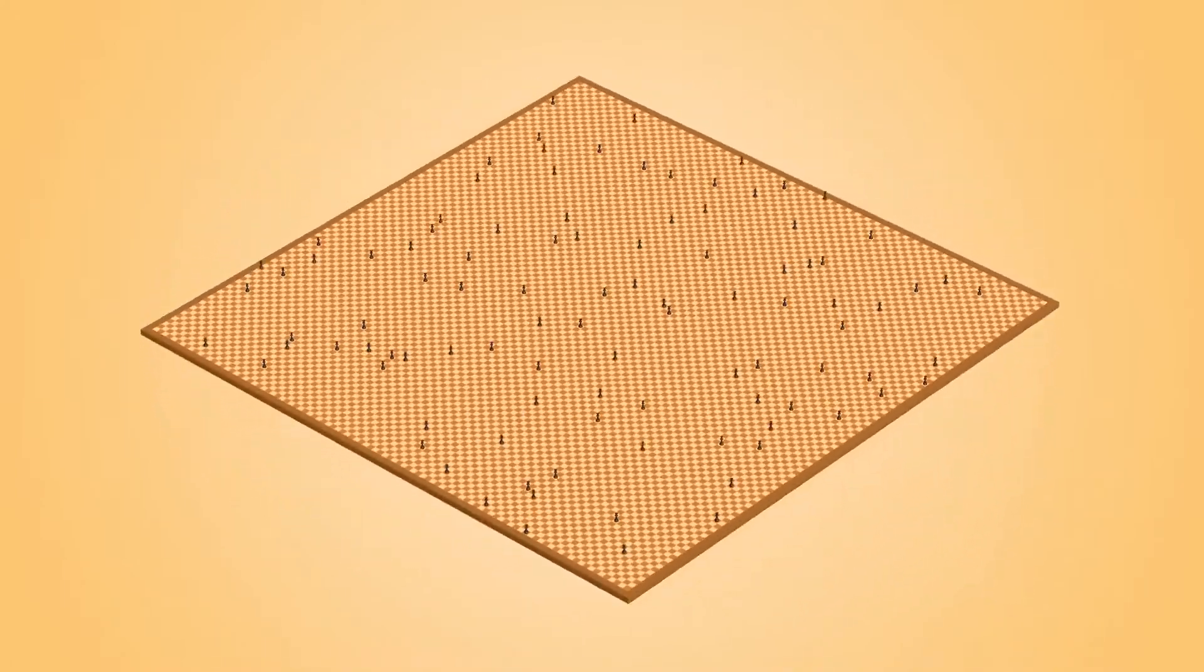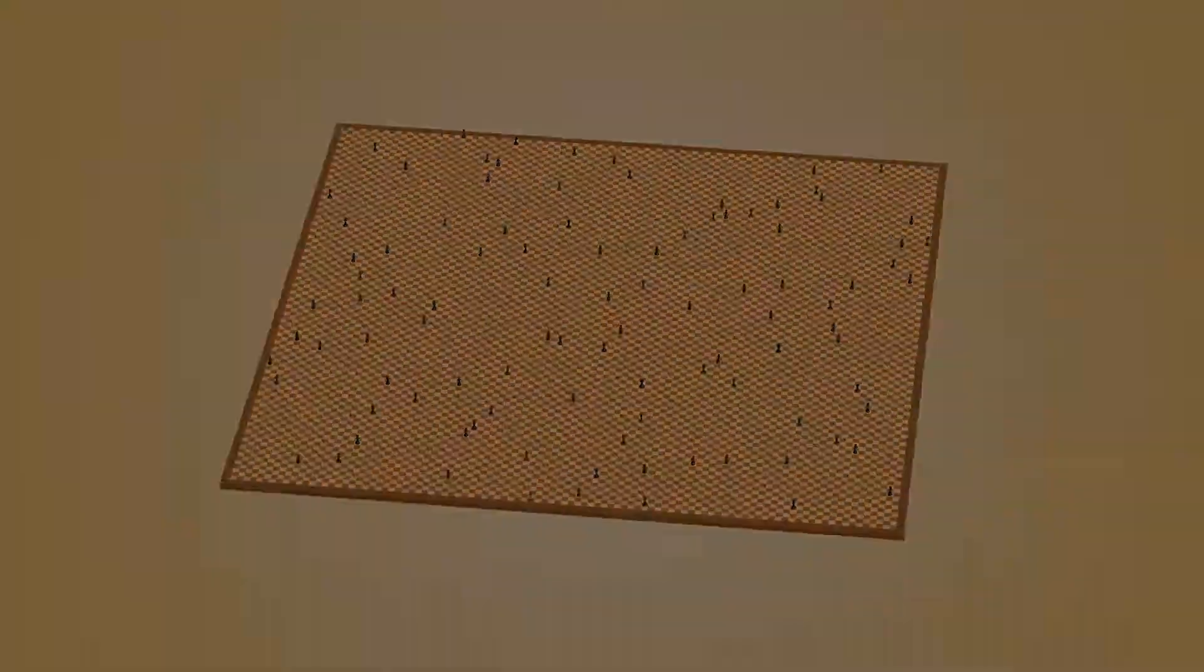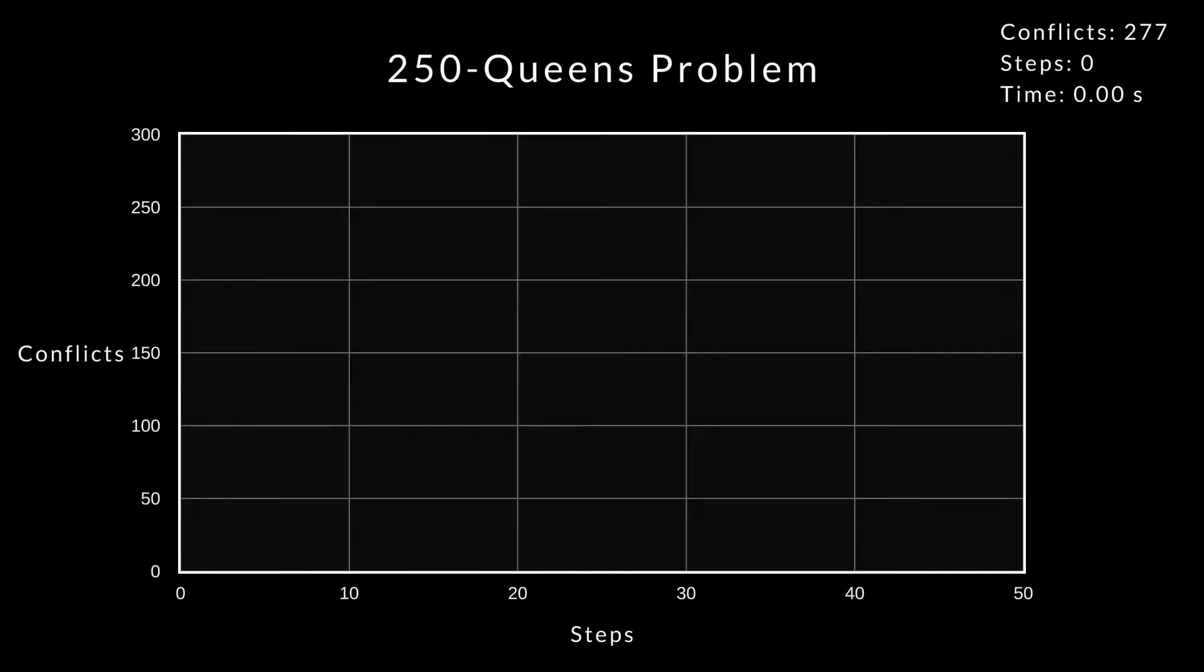Now we will try with 250 queens. The algorithm is actually running. Unfortunately, it is so slow that we don't even have two data points yet, so there is no line. Oh, now we can see a little bit of progress, but let's try to make it faster.